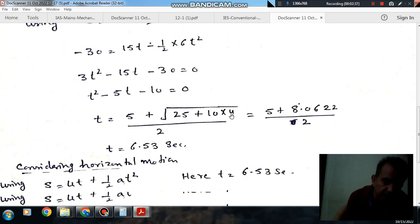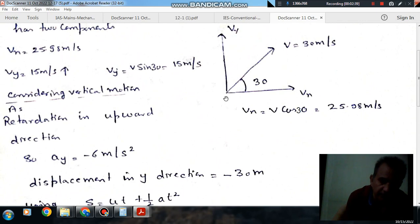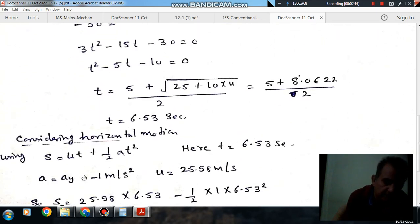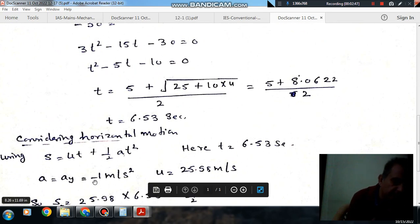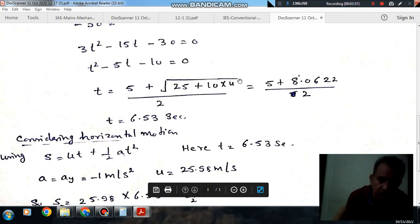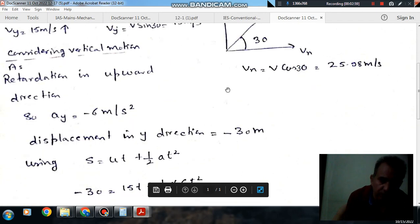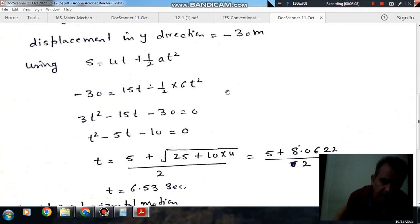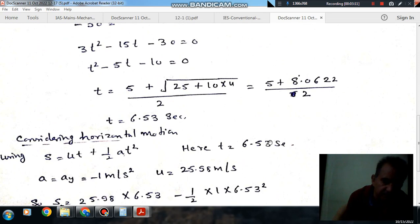So in that time, the particle is also moving in x direction and its acceleration is given as, as it is also retarding in this direction, so its acceleration is minus 1 m per second squared. And time to reach the bottom from the original point by 30 meters, we have found out, is 6.53 seconds.